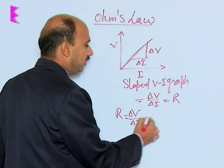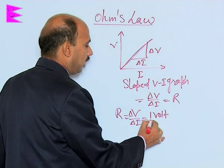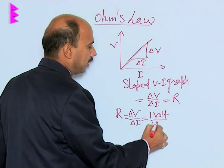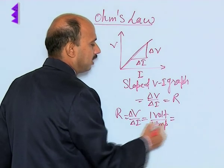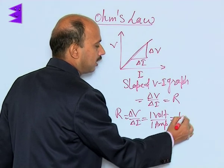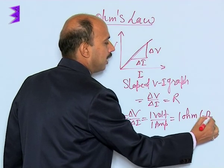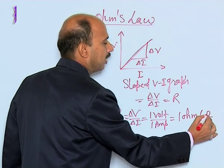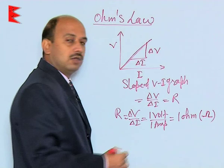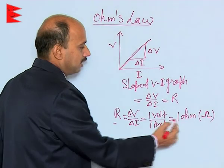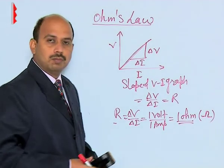So R is written as delta V upon delta I. If the change in potential difference is 1 volt and the current is 1 ampere, then the resistance of the conductor is 1 Ohm, represented by the symbol Ω. The SI unit of resistance is 1 Ohm.